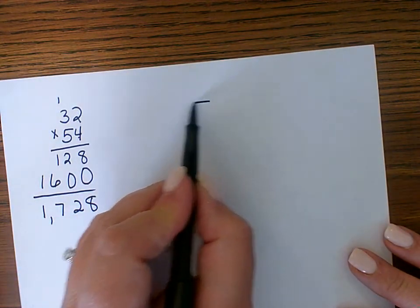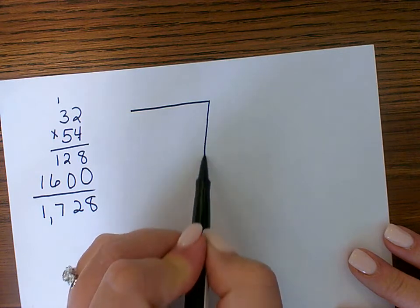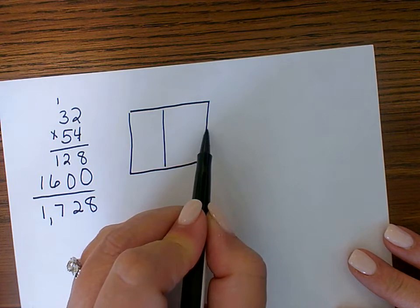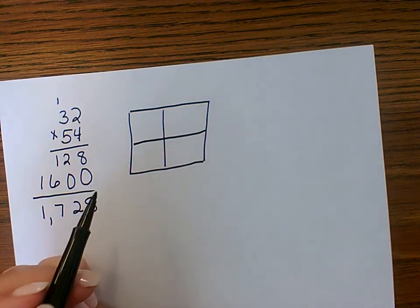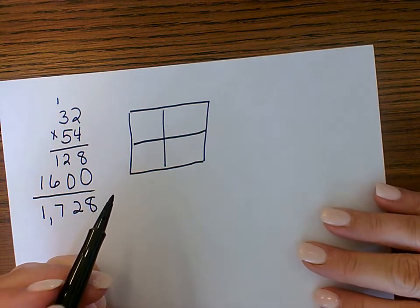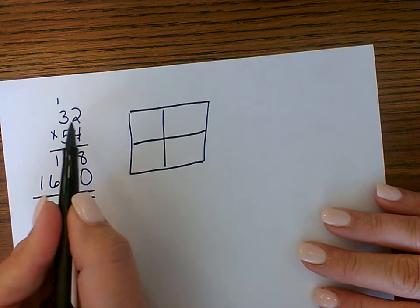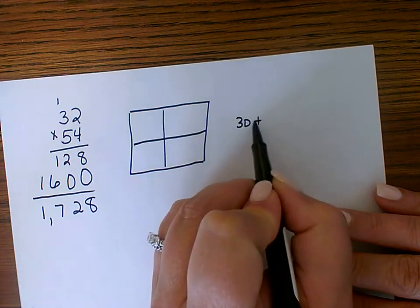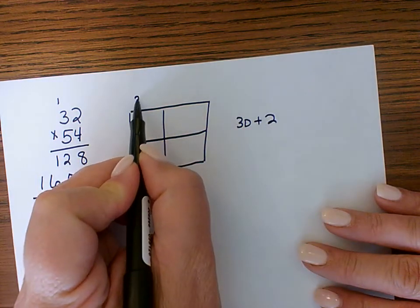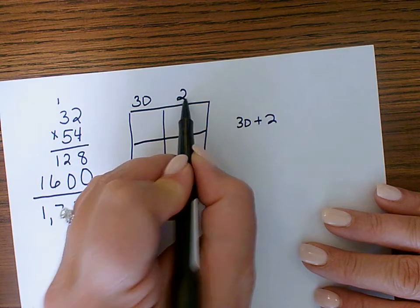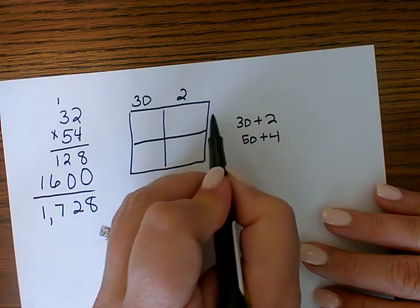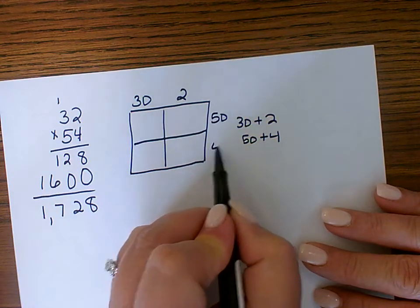The box method is really nice because it relies on place value and kind of helps your child to understand the value of numbers and digits a little bit more. What you have to do is you have to do expanded form. So like this number 32 becomes 30 plus 2. So in the top box, just do 30 and 2. This number 54 becomes 50 plus 4. So right here you're going to do 50 and 4.